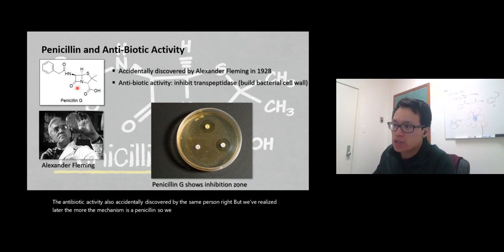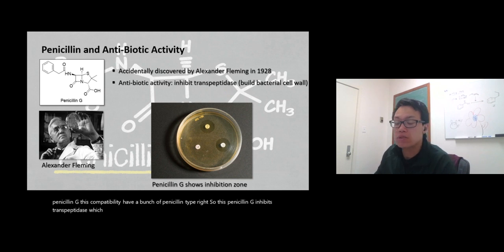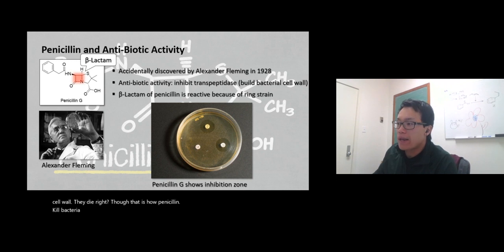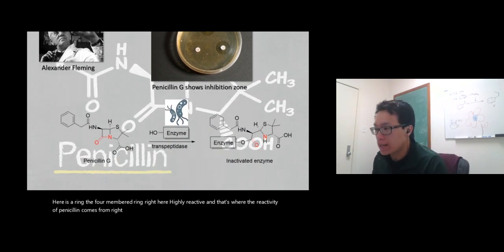We have the structure right here - we call it penicillin G. This penicillin G inhibits transpeptidase, which is an enzyme that builds cell wall for bacteria. Bacteria that don't have a cell wall die - that's how penicillin kills bacteria. The beta-lactam of penicillin is reactive because of ring strain. There's the beta-lactam right here - this four-membered ring is highly reactive, and that's where the reactivity of penicillin comes from. Let's take a look.